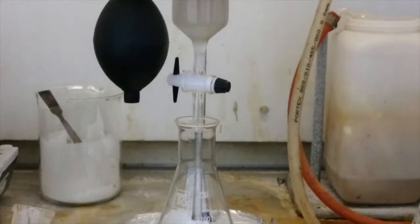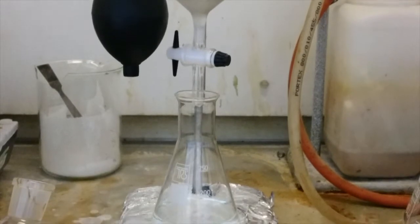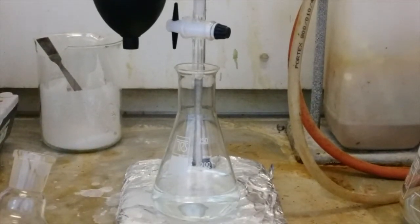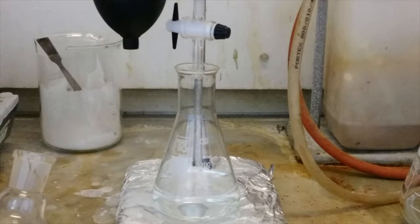You should also now begin collecting the solvent that elutes from the column as fractions. At this stage you can collect fractions of 100 mils or more however as your product begins to elute you should collect much smaller fractions of less than 50 mils to ensure no contamination of your product.